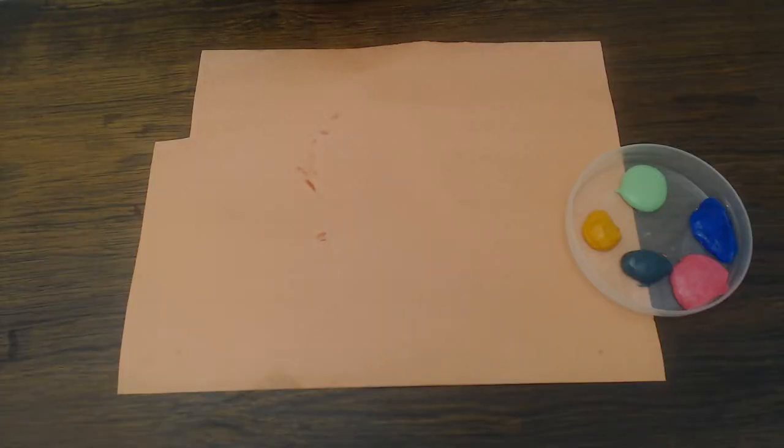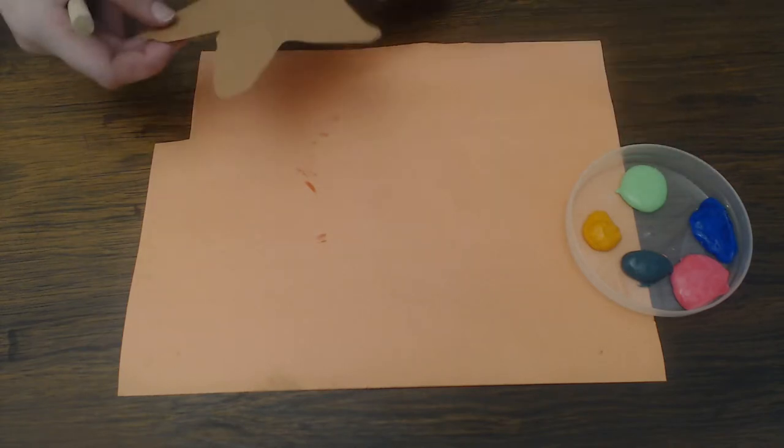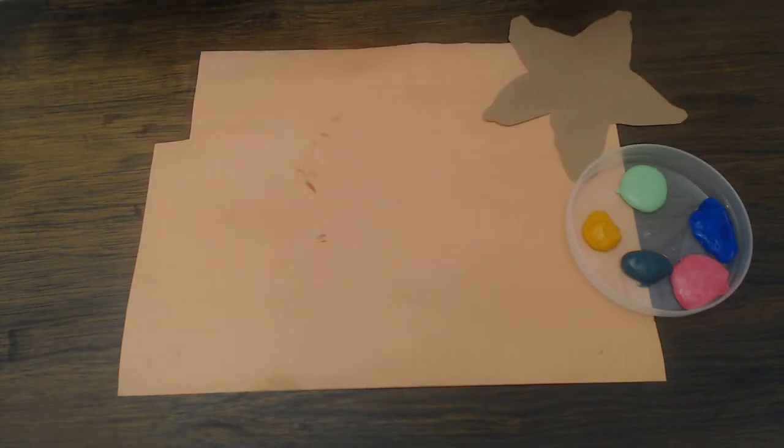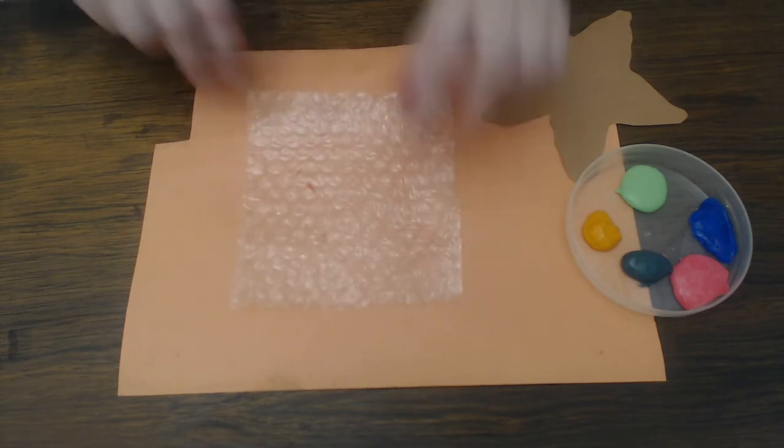And now we are going to do the fun part. I laid out a piece of scrap paper so that I don't get my table messy. I have my paint. I'm setting my starfish aside and I have my square of bubble wrap.